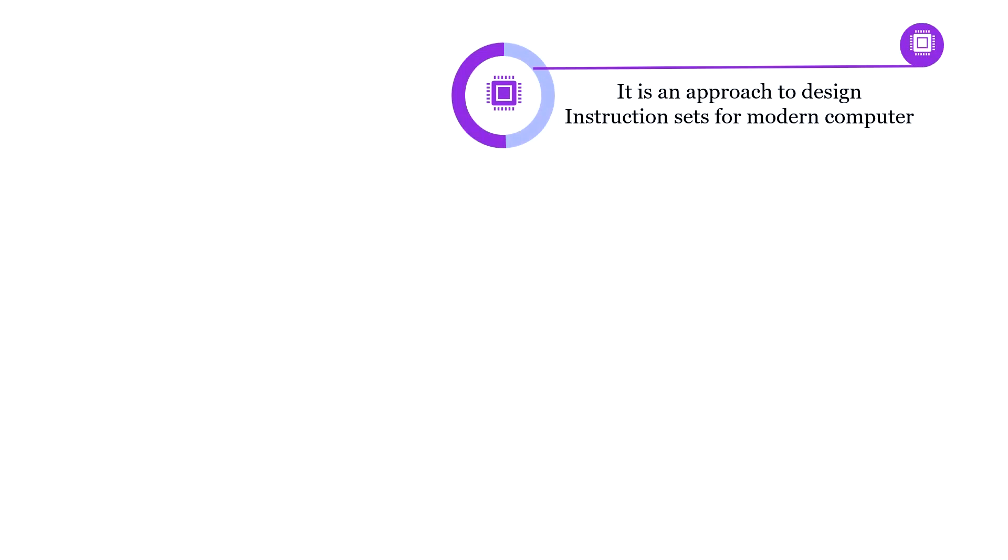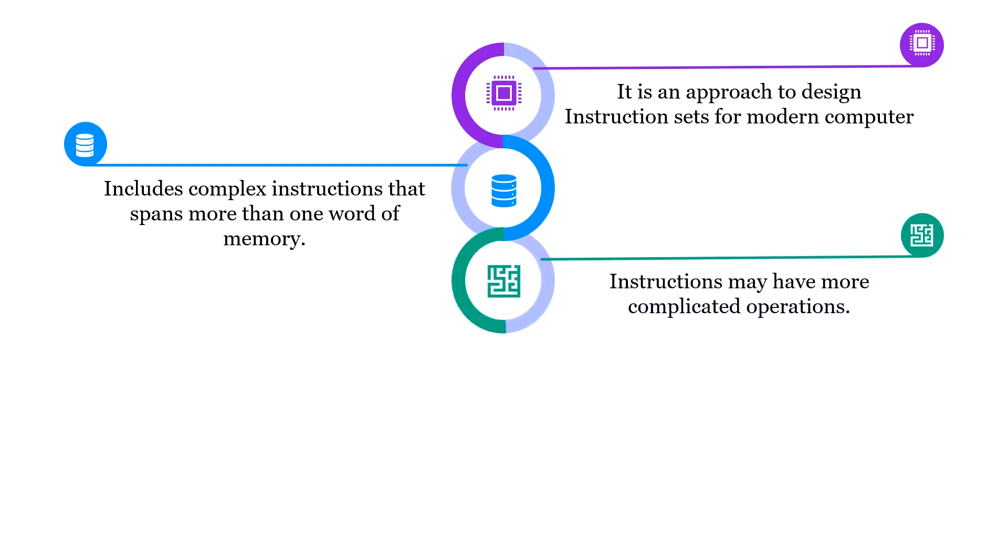Complex Instruction Set is used to design instruction sets for modern computers. A single instruction occupies more than one word of memory because a single instruction has several low-level operations. So we require less number of instructions to design a program, which ultimately reduces the size of the program.